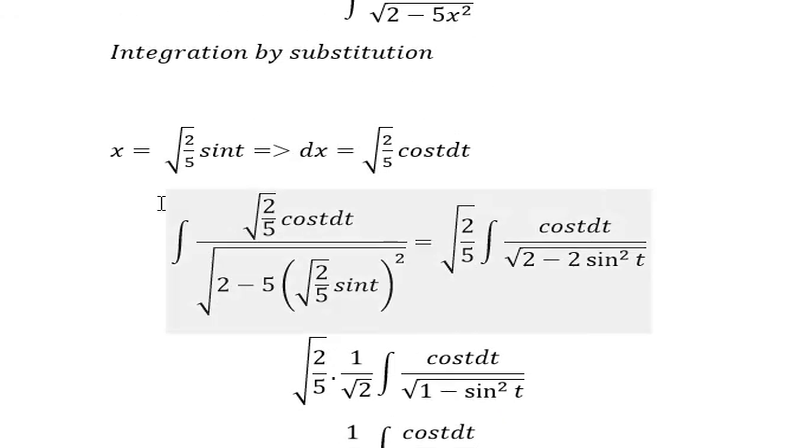Now we have t in here. To convert back to x, we will put square root 2 over 5 equals sin t. And then we will use inverse trigonometry, that's arcsin. That's why you can find x in here. So that's arcsin, and we put square root 5 over 2 x. And this is the final answer.